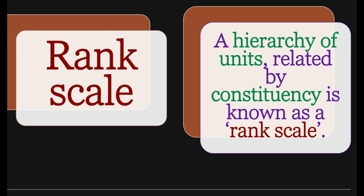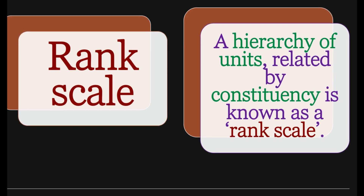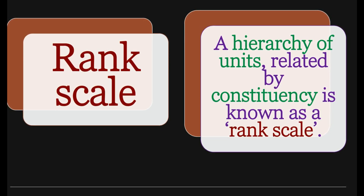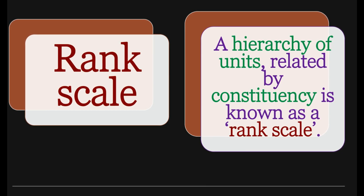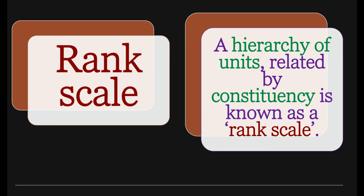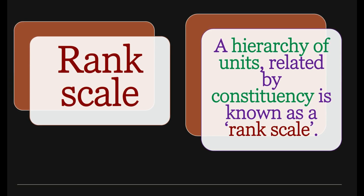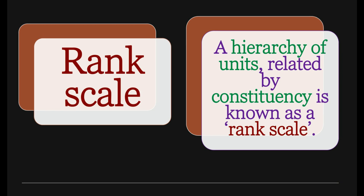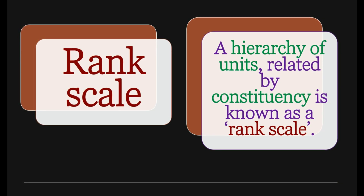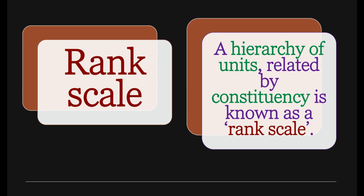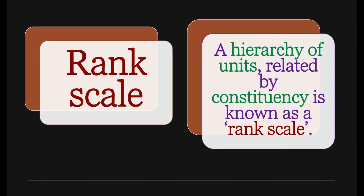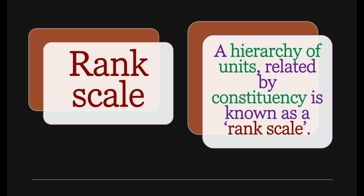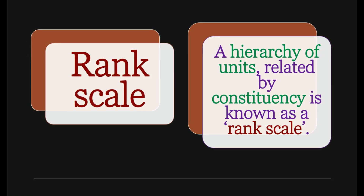The last point of our lecture is 'rank scale.' A hierarchy of units related by constituency is known as a rank scale. A text is a bigger unit; you divide it into different hierarchies and different levels. So rank scale is a hierarchy of units related by constituency. These are the eight terms you must keep in mind and memorize, so you can go back to the text we discussed and understand the interpretation of text at the level of phonology.